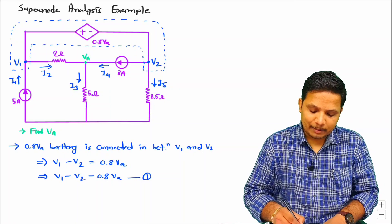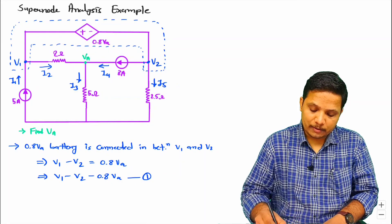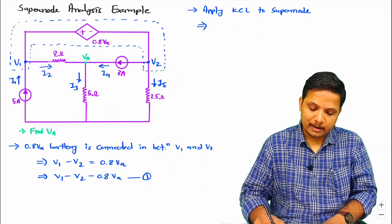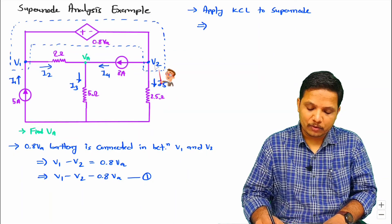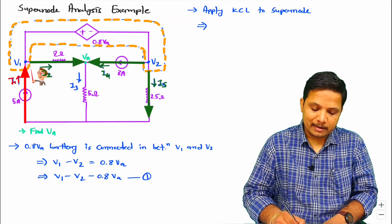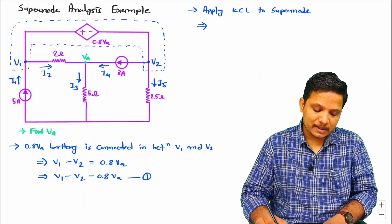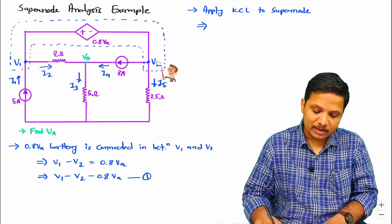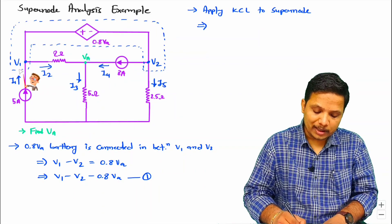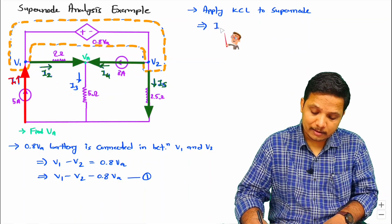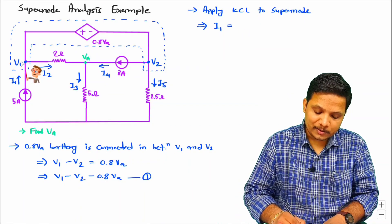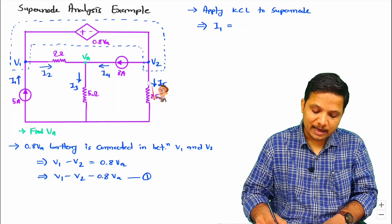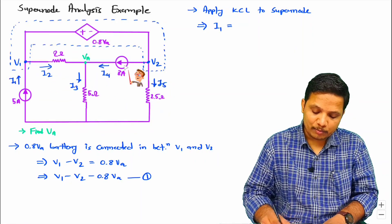Now I will apply KCL to this supernode. With this supernode, entering current equals leaving current. V1 and V2 combined are a single node, and inside this node I don't need to show any current. With this supernode, the entering current is I1 at V1, and there is no entering current at V2. The total entering current is I1. The leaving currents are I2 at V1, and I4 and I5 at V2, so total leaving current is I2 plus I4 plus I5.